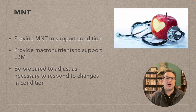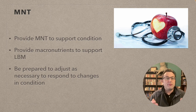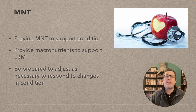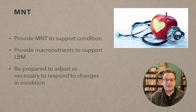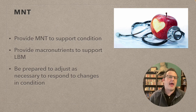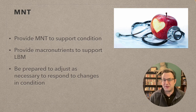The MNT for wasting conditions is to provide nutritional support for the wasting condition itself and for whatever underlying issue exists. If someone has cancer, they have an extremely catabolic system and need extra nutritional support. Provide macronutrients to support and protect lean body mass as much as possible, and be prepared to adjust as necessary — these things are dynamic and you need to monitor the patient continuously.